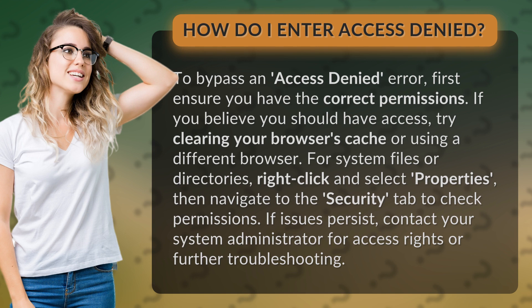For system files or directories, right-click and select Properties, then navigate to the Security tab to check permissions.